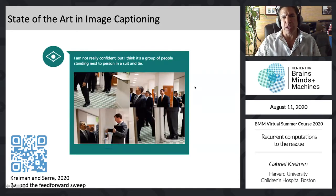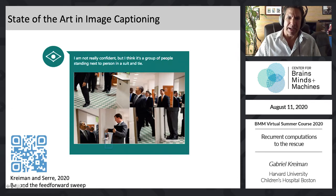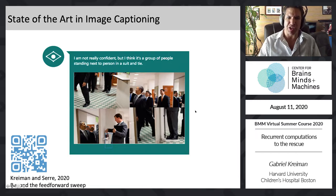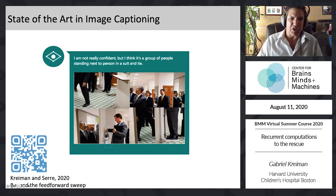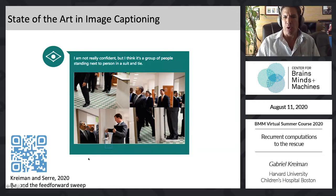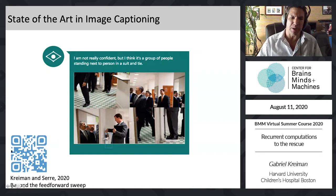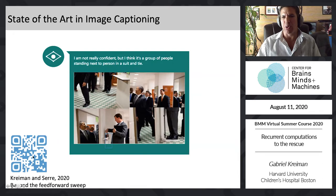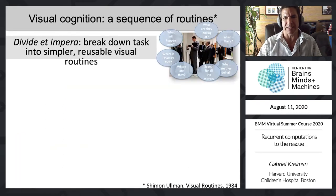If you scramble the image, the system says 'I'm not really confident, but I think it's a group of people standing next to a person in a suit and tie.' Despite massively transforming the image, the state-of-the-art AI system was not able to detect that transformation. You can go to our website — whenever you see a QR code, scan it to download data and algorithms, hopefully inspiring you to work on these questions.